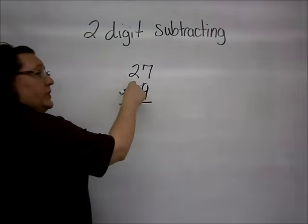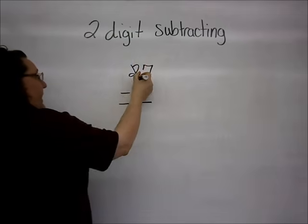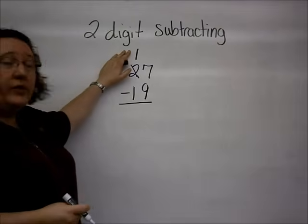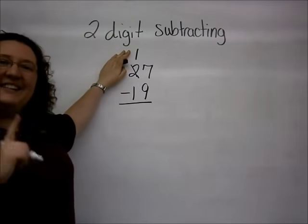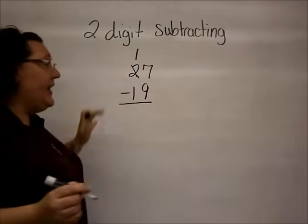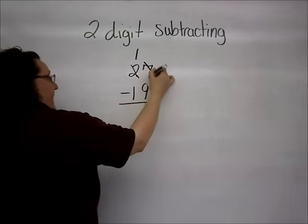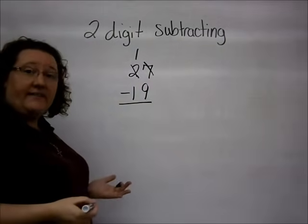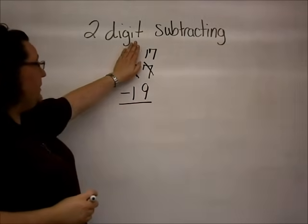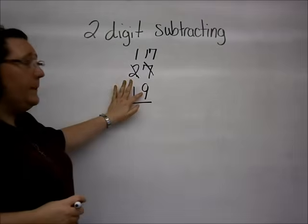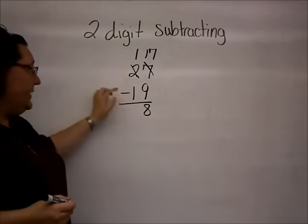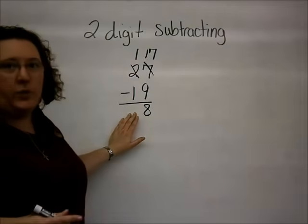So, I go next door to the tens place, and I borrow 1. So, when I subtract 2 minus 1, I end up with a 1. I take that 1, 10, and turn it into 10 ones. I add that to the ones that I already have. So, instead of 7, I now have 17. Now, my top number is bigger. 17 minus 9 gives me 8.